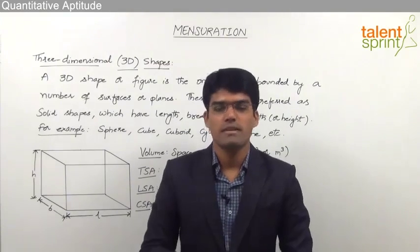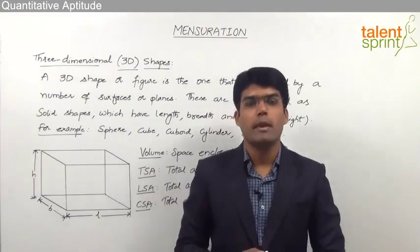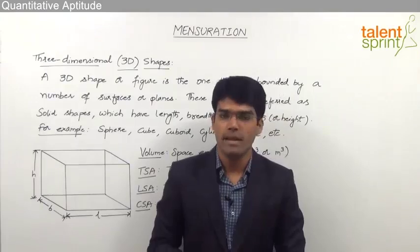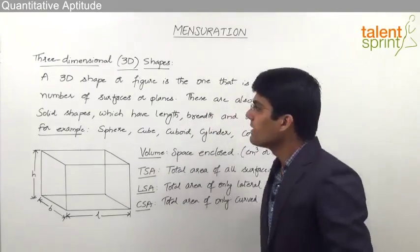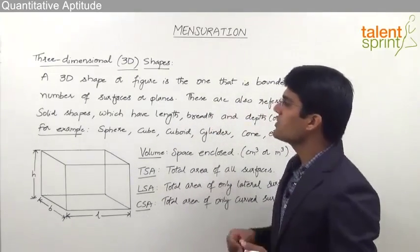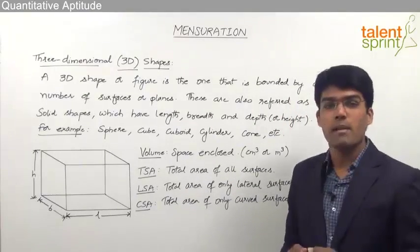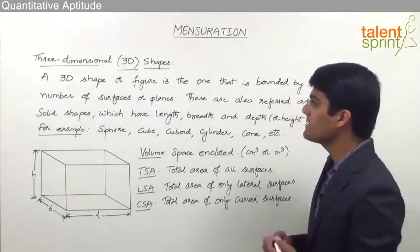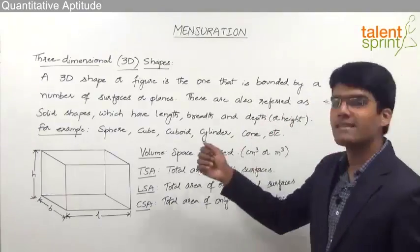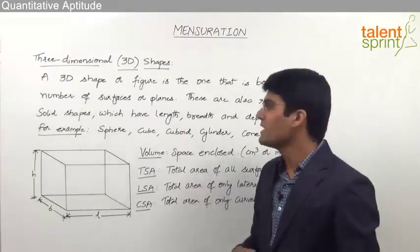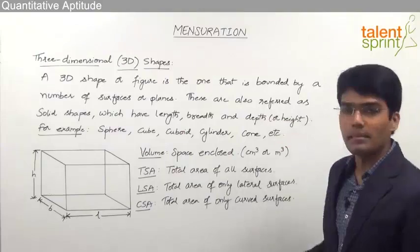Let us now understand what is meant by a three-dimensional shape and what are the different parameters that we measure for 3D shapes. A 3D shape or figure is the one that is bounded by a number of surfaces or planes. These are also referred to as solid shapes which have got length, breadth and depth.